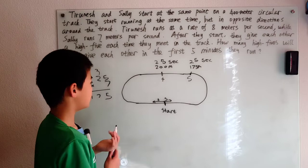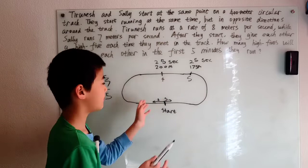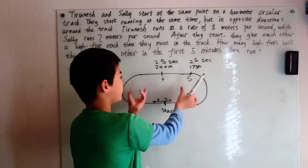Well, what about after 26 seconds? After 26 seconds we know each second Tranish is running 8 meters closer to Sally, but Sally is also running 7 meters closer to Tranish. Meaning every second they are running 15 meters closer to each other in total.